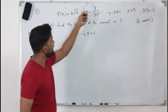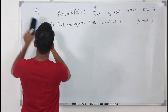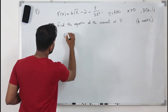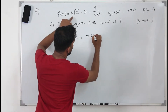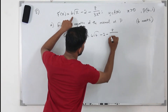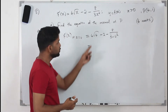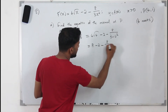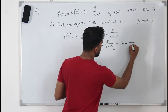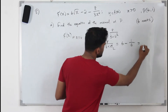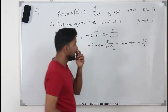You need to find the slope. This is a gradient function — replace x by the x-coordinate 4. When you replace x by 4, your f'(x) at x=4 is: 4 times square root of 4 minus 2, minus 8 over 3 times 4 squared. Square root of 4 is 2, so 4 times 2 is 8, minus 2, minus 8 over 3 times 16. Simplifying gives 6 minus 1 over 6, which is 36 minus 1, so 35 over 6. That's the slope.